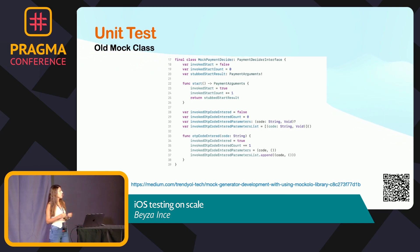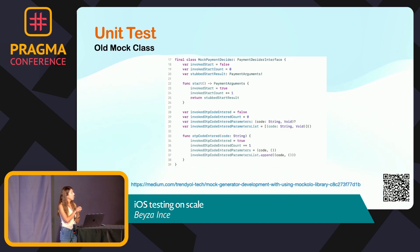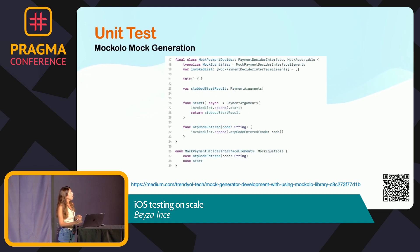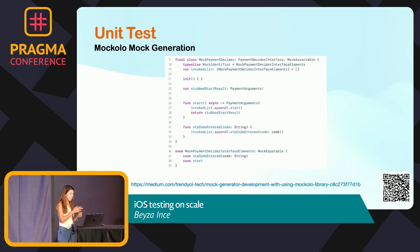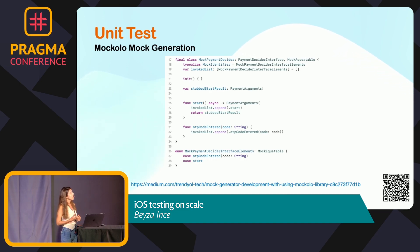Another challenge in unit tests is mock generation. In the past, we used the CVT mock generator for Xcode library, but this tool ended support for its open source library. That's why we had to fix the problems with an internal tool. We created a new extension using MockColo, developed by the Uber team — we modified this MockColo library to generate our internal mock classes easily. Now we can support async/await features in mock classes with this tool.